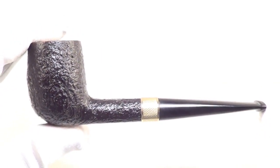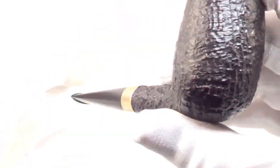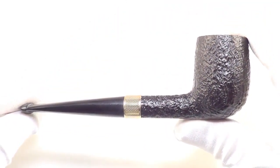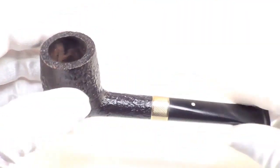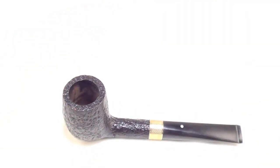So there you have it. A beautiful group 3 classic billiard from 1999 from Dunhill with that beautiful gold band. Ready to be enjoyed by its next owner.